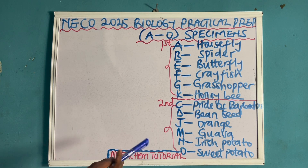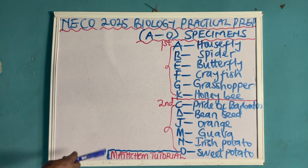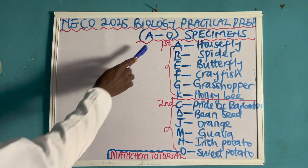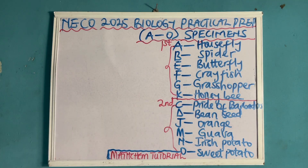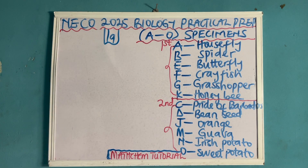Most of all, all students know what a housefly is, spider, butterfly, crayfish, grasshopper, and a bee. Now let's look at the likely questions or possible things they can ask you based on all the specimens in this first category. What they can ask you — let me name this number 1A — is that they can ask you to classify each of the specimens according to their class.